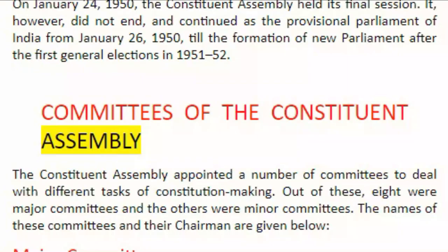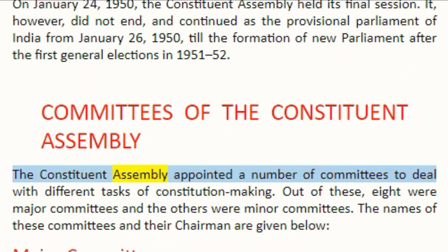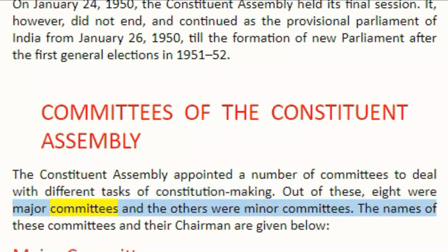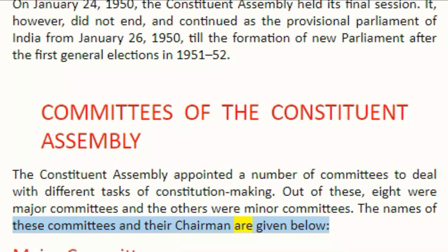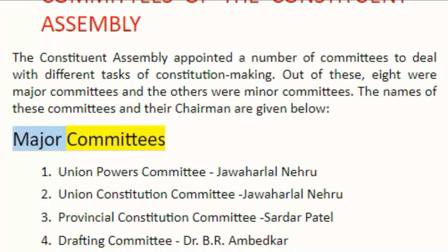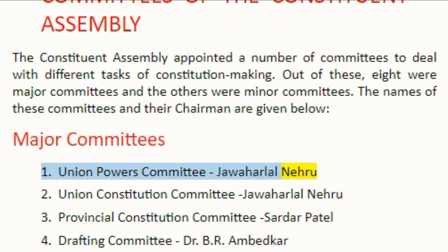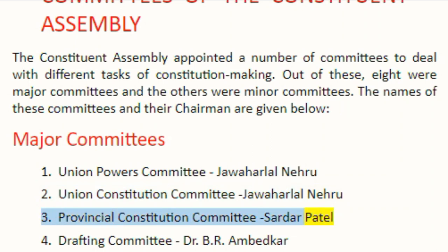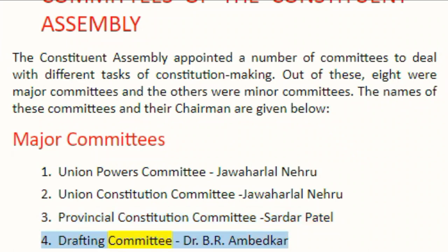Committees of the Constituent Assembly. The Constituent Assembly appointed a number of committees to deal with different tasks of constitution making. Out of these, eight were major committees and the others were minor committees. The major committees and their chairmen were: 1. Union Powers Committee — Jawaharlal Nehru; 2. Union Constitution Committee — Jawaharlal Nehru; 3. Provincial Constitution Committee — Sardar Patel; 4. Drafting Committee — Dr. B.R. Ambedkar.